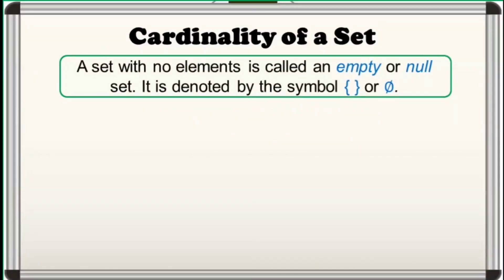If a set has no elements, it is called an empty or null set. It is denoted by either of the two symbols. One is open and closed braces with no element in between, and the other one is a symbol inspired from a Danish and Norwegian alphabet.